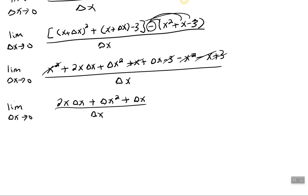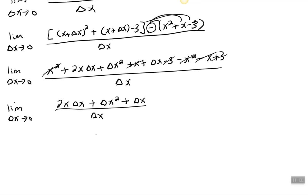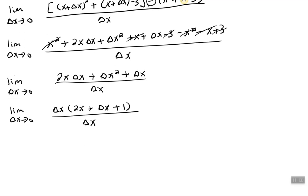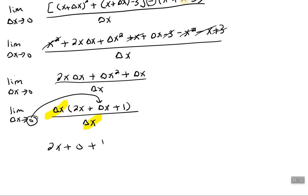Let's continue to simplify — let's factor out a delta x in the numerator. So we get (2x + delta x + 1) times delta x, all over delta x. Now we can cancel those delta x's. With those gone, we substitute 0 in for the remaining delta x. Therefore our derivative is 2x plus 1.